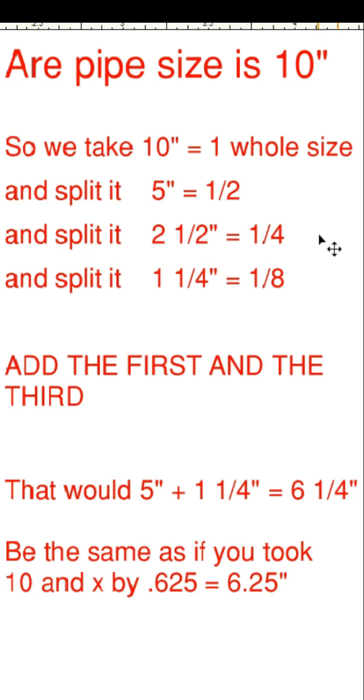Add the first and the third, that would give you 5 inch plus 1 and a quarter, equaling 6 and a quarter. It would be the same as if you took 10 inch and multiplied by 0.625.